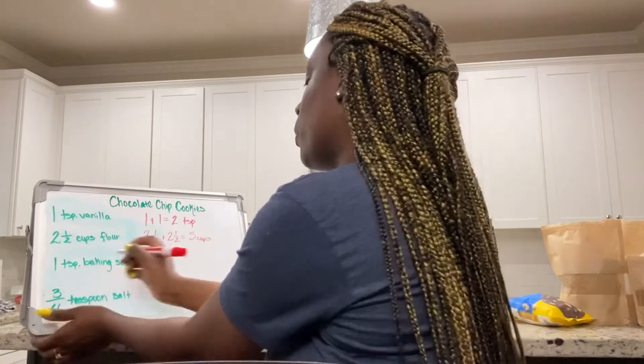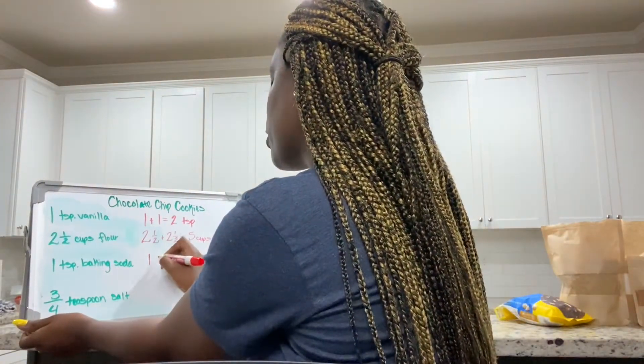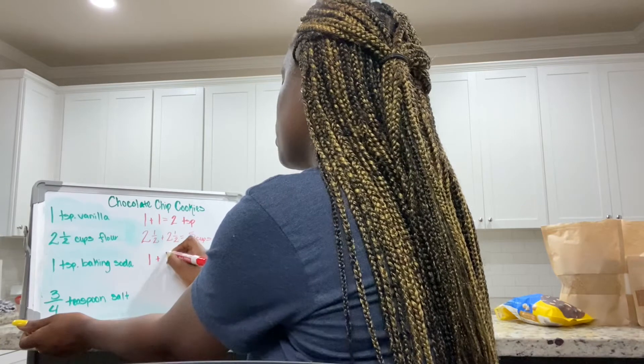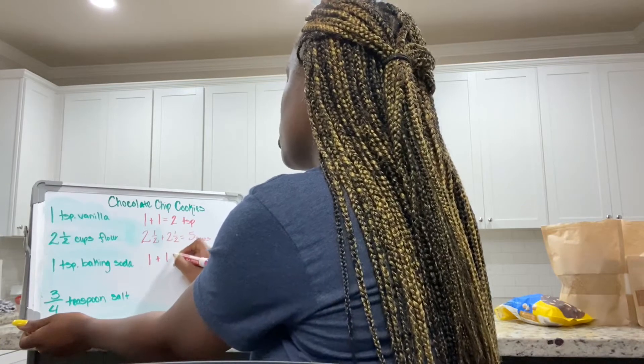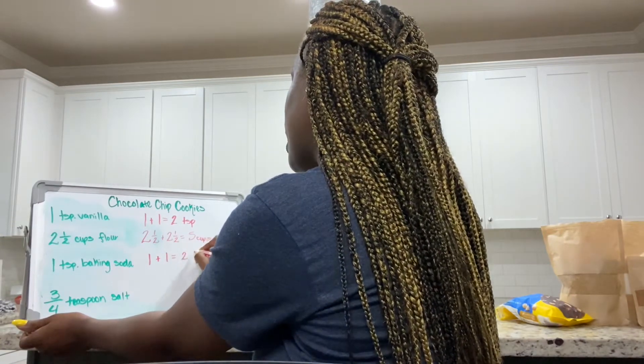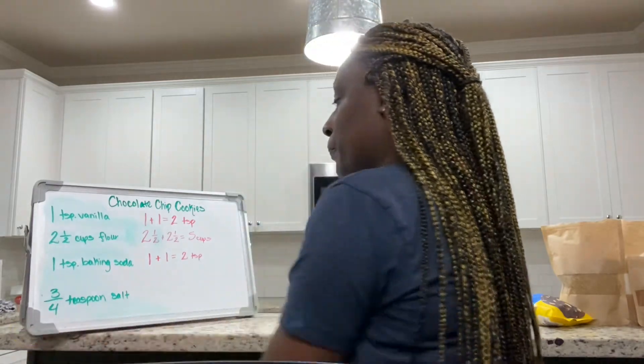I need one teaspoon of baking soda for 30. I'll add another teaspoon for 60, and now I'll need two teaspoons of baking soda.